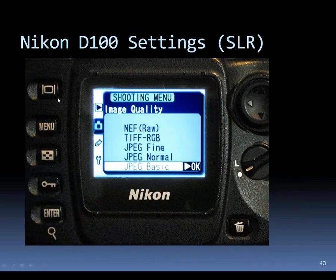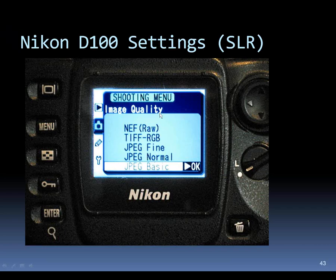My old camera, bought in 2003, can save a RAW file or—unusually for digital cameras—a TIFF, which is uncompressed and very large. I also have three JPEG settings: fine, normal, and basic. To get the most pictures on my memory card I'd use JPEG basic, but that's also the lowest quality.